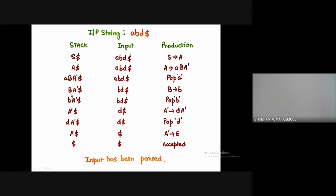Similarly, the next non-terminal is B. We write its production, then replace it with small b and later pop it out. This way, the whole stack becomes empty, where at last we have the epsilon node, which is nothing but an empty string.